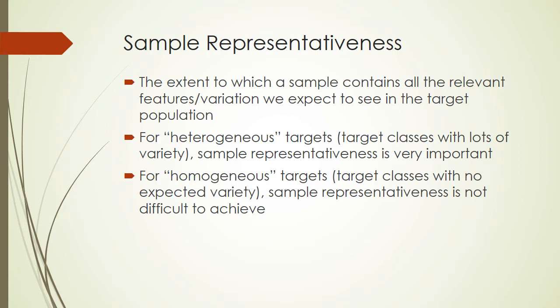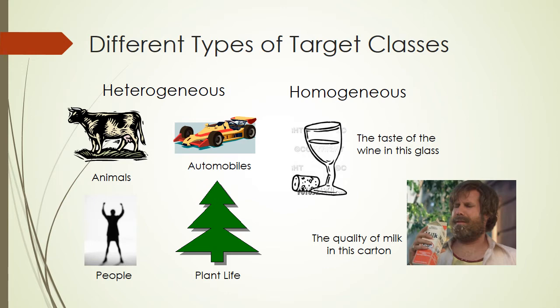Let's take a look at some examples of heterogeneous and homogeneous target populations. Here we have, on the left, a list of some examples of heterogeneous target populations. Animals are heterogeneous. The class or population of animals contains lots of diversity — many different species, all different shapes and sizes, living in different habitats, with different behaviors, priorities, likes, and dislikes. I could not simply choose a cow to try to represent all animals. I would need to choose a sample that contains lots of diversity if my population is all animals.